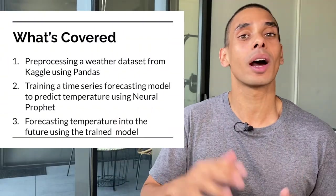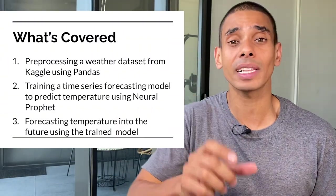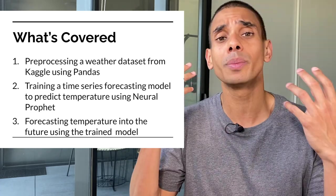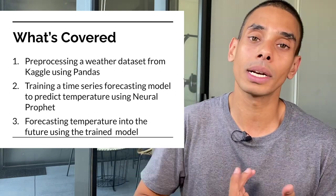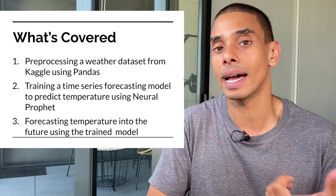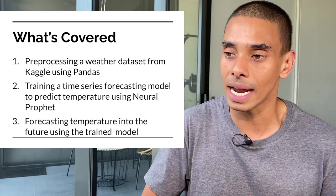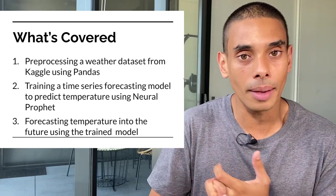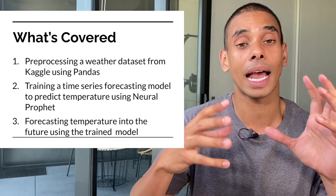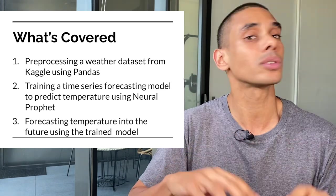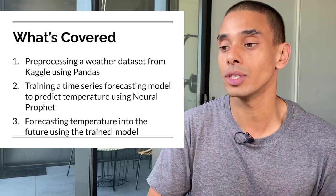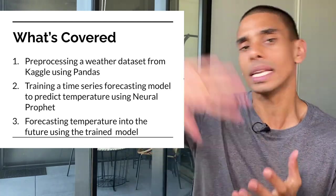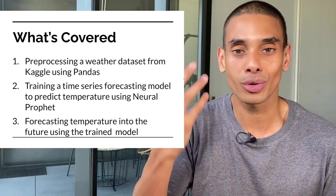Let's take a deeper look at what we're going to be going through. So in this walkthrough, we're going to be going through a couple of key things, but specifically by the end of this video, you should be able to predict the temperature using the Neural Prophet package. So first up, we're going to start out by pre-processing our data and loading it up. We'll be using a Kaggle dataset for this. We'll then train a time series forecasting model using Neural Prophet. So this is actually a library that's been built on top of ARNet and Facebook's Prophet package. Then we're going to forecast the temperature into the future using our trained model.